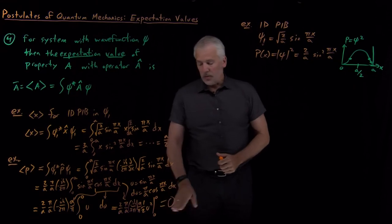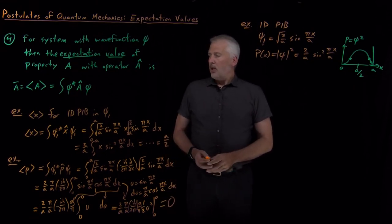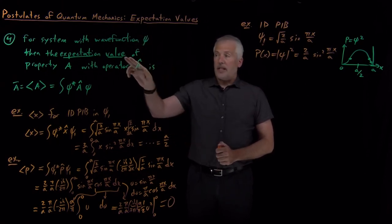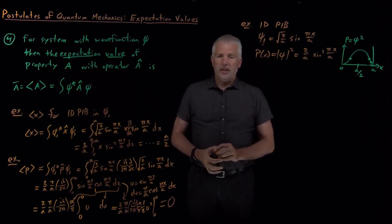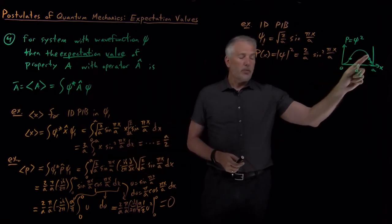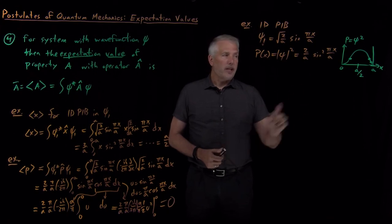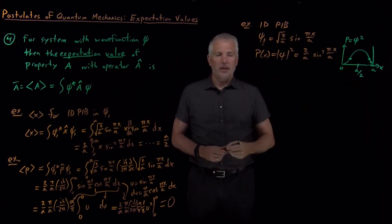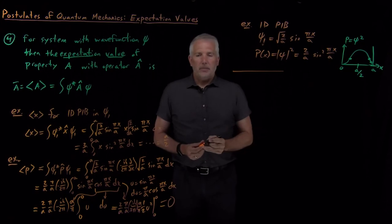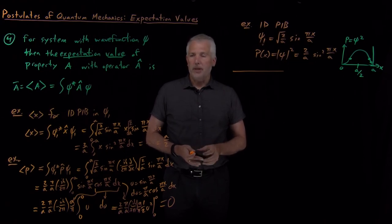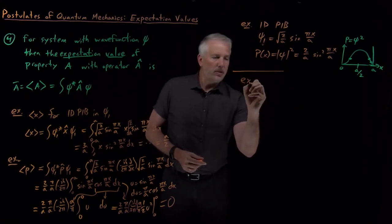Those are two examples of how to use the fourth postulate to calculate the expectation value for a property. We've seen that we can predict the average value of a property even when we can't predict the specific value. I can't tell you exactly where the particle is, but I can tell you on average where I find it — on average, in the middle of the box. However, there's one exception to the claim that quantum mechanics is always probabilistic: one case where we can tell exactly what the result of a measurement will be.